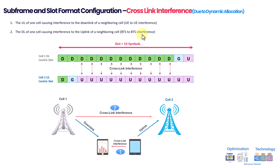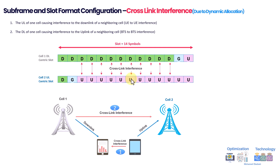From point two, this would be BTS to BTS interference. The second type is exactly the same concept but in the opposite direction. Assume cell two is transmitting uplink — the users will make interference for the downlink being received by other users. The uplink of these users will interfere the downlink of those users. This also has a big impact, and this kind of cross-link interference will be severely impacted in this scenario.